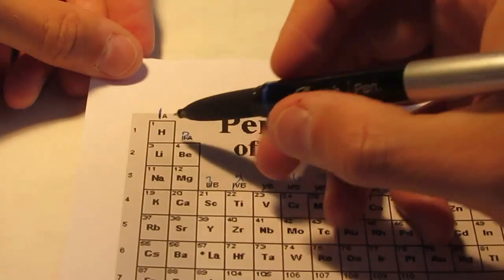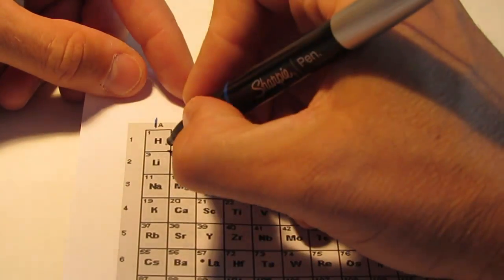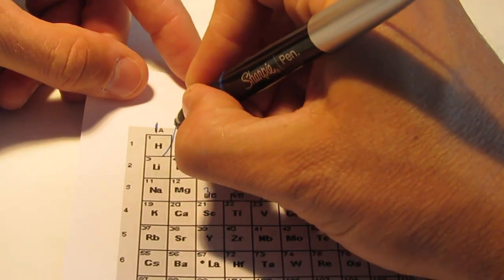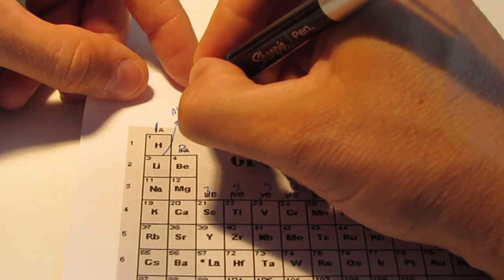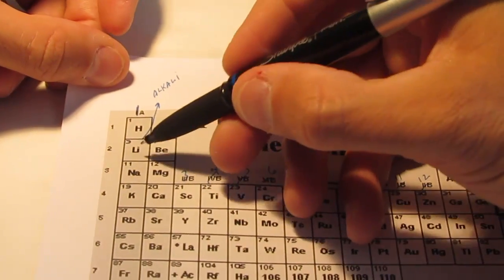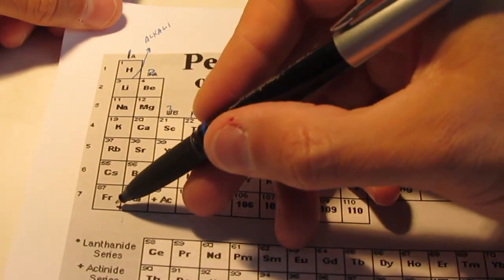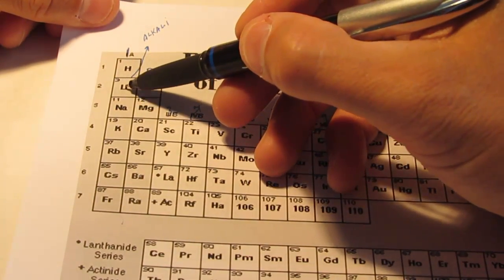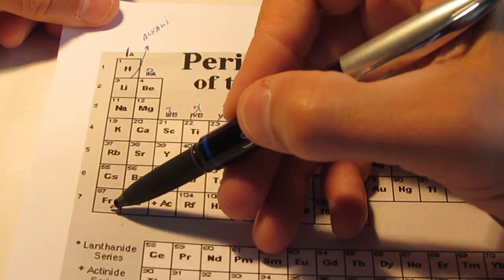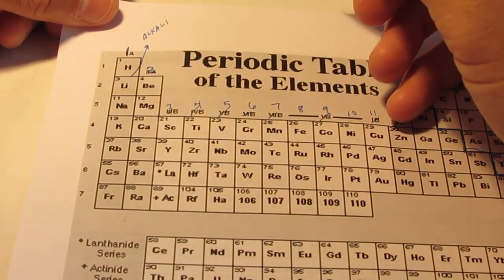Then, if we jump all the way to the left side, this first group, with the exception of hydrogen, so starting with lithium, these are called the alkali metals. Lithium, sodium, potassium, rubidium, cesium, and francium. So, the group 1 metals are called the alkali metals. Hydrogen is not a metal, so it's not included in that name.